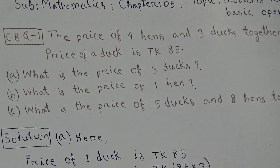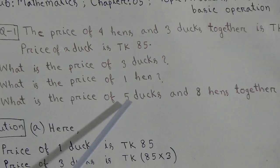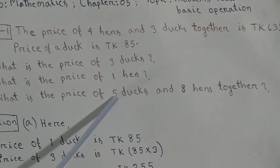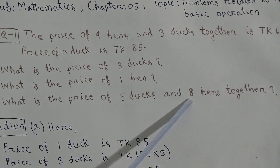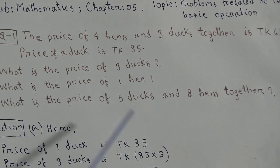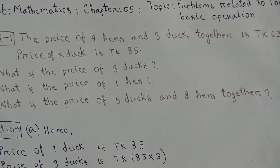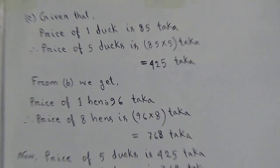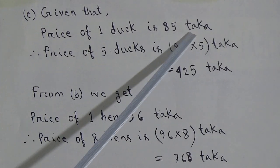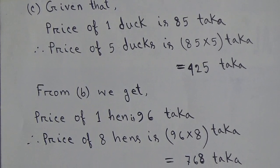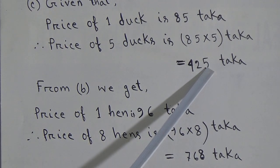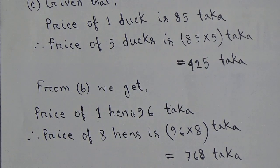Now students, we will solve question C: What is the price of 5 ducks and 8 hens together? At first, we find the price of 5 ducks, then the price of 8 hens, then add them together. The price of 1 duck is given as TK85. So the price of 5 ducks is 5 times 85. 5 fives are 25 — write 5, carry 2. 5 eights are 40, plus 2 is 42. That means the price of 5 ducks is TK425.